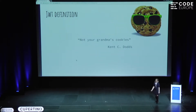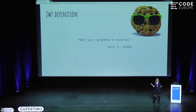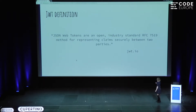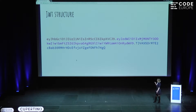We definitely need something better. As of late, the way to implement session management is with JSON Web Tokens — which, as Kent C. Dodds said, they're not your grandma's cookies. A formal definition: JSON Web Tokens are an open industry standard method for representing claims securely between two parties. In practice, this means we have this weird-looking string which contains three parts, separated by dots. Each part has its own meaning and functionality.